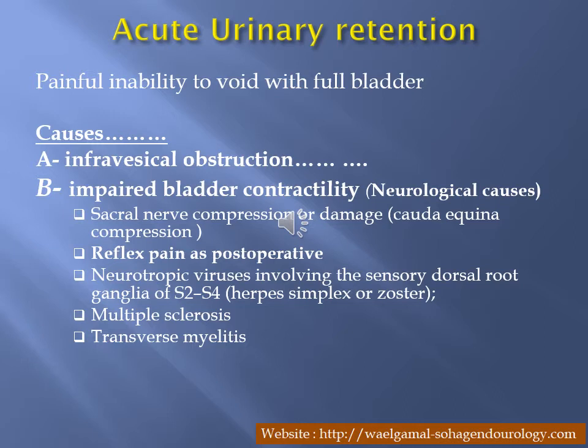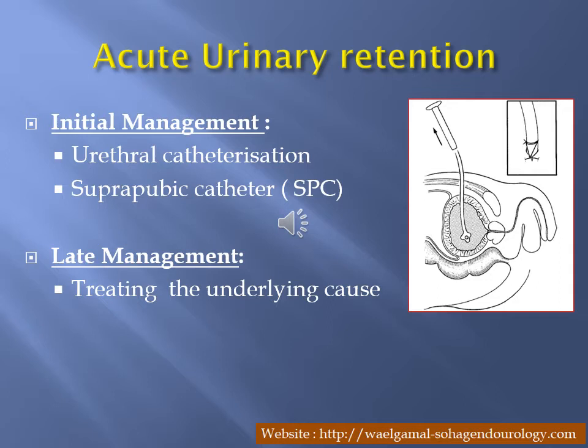Very important: do not forget transverse myelitis. Any case of acute retention without infravesical pathology — refer the patient for neurological assessment. Management of acute retention: relieve the obstruction. If the urethra is healthy, insert a urethral catheter. If there is a urethral problem, insert a suprapubic tube. After relief, treat the cause — urethroscopy for a posterior urethral stone, drainage for a prostatic abscess.